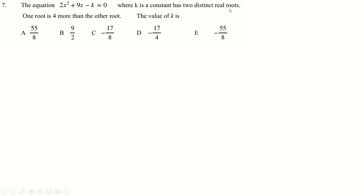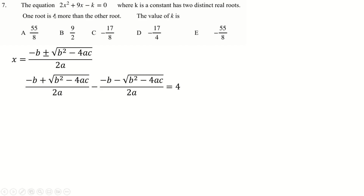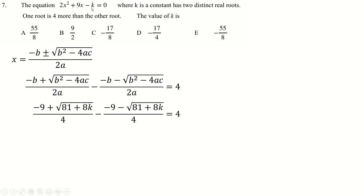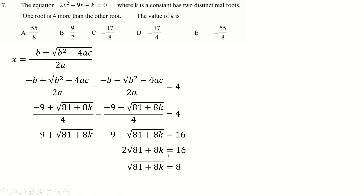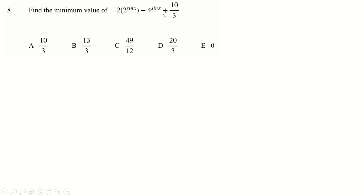Question 7: a quadratic with two distinct real roots, so b² − 4c > 0. One root is four more than the other. Using the quadratic formula, one root uses the plus and one uses the minus sign, so their difference is 4. Setting the difference equal to 4 with a = 2, b = 9, c = minus k: multiply everything out, cancel the nines, simplify, square both sides, and k can be read off fairly easily.